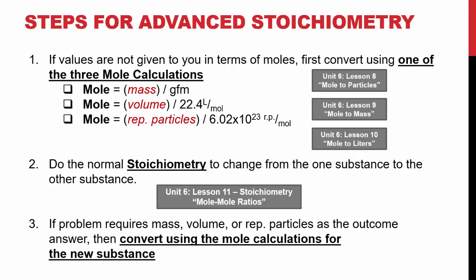Finally, if the problem requires mass, volume, or representative particles as the outcome, then you have to change the amount of moles that you got from step 2 into the converted unit that you need for step 3. So for most of these advanced stoichiometric calculations, you're doing at least two steps. For real hard advanced stoichiometric calculations, you end up doing all three.